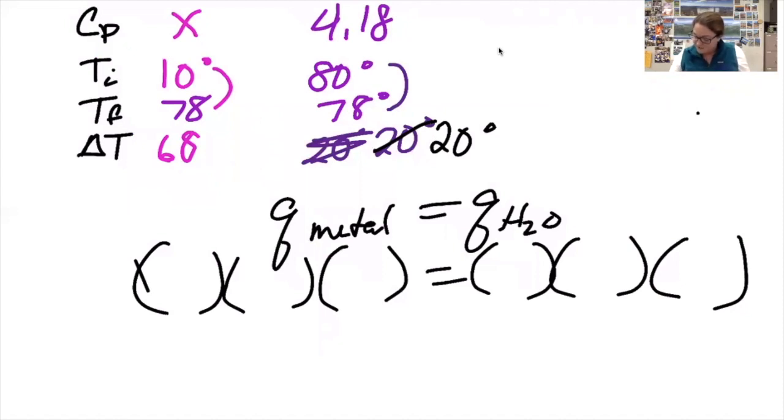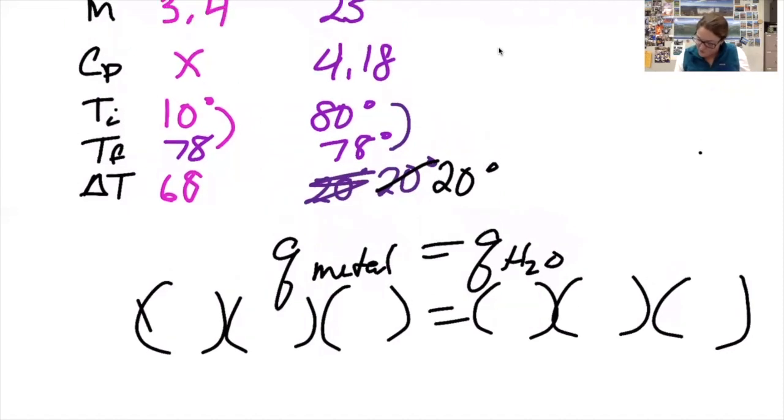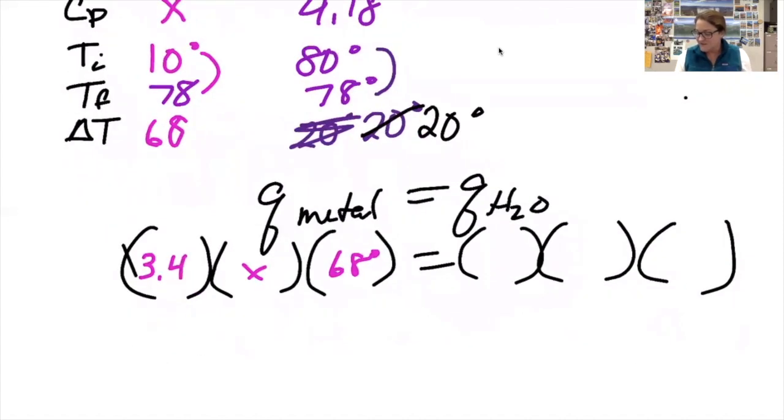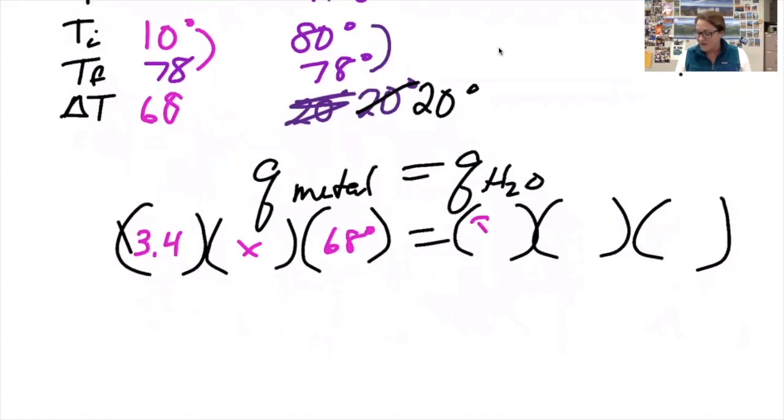So for the metal, its mass is 3.4, its specific heat is what I'm looking for, its temperature change is 68 degrees. I'll multiply that through. For the water, the mass is 25, the specific heat of water is 4.18, my change in temperature is 2 degrees.